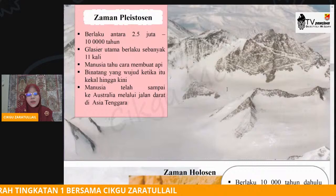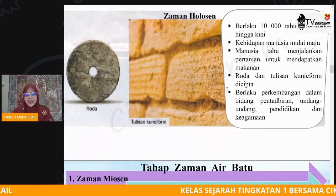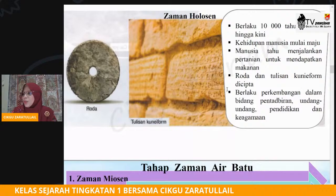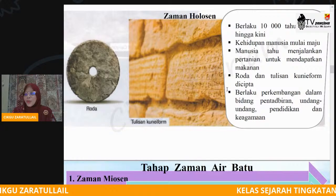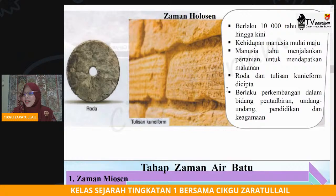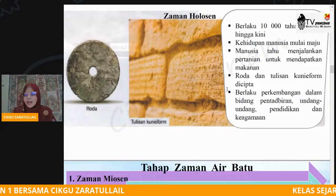Kerana benua Australia ini tak jauh pun daripada kita, dekat sahaja. Sekarang kita lihat zaman yang keempat iaitu zaman Holosen. Zaman Holosen ini berlaku 10,000 tahun dahulu hingga hari ini. Dengan kata lain dunia kita, zaman kita pada hari ini pun termasuk dalam kategori zaman Holosen. Kehidupan manusia semakin maju.